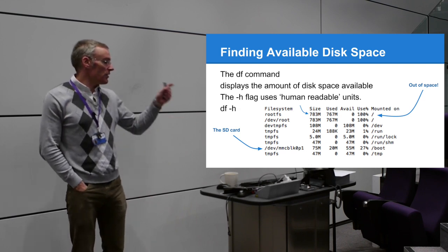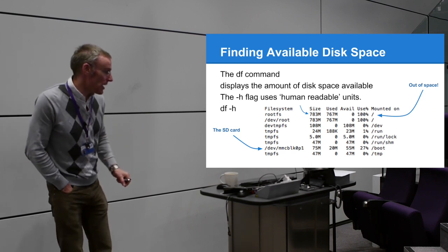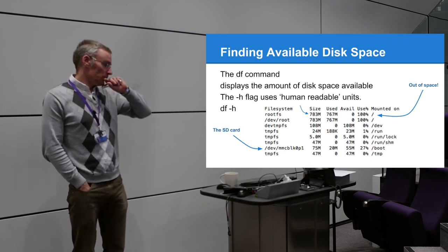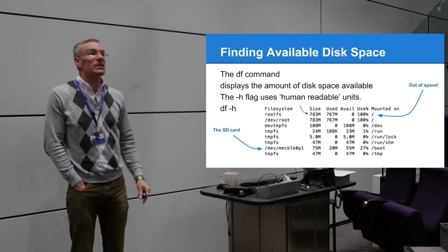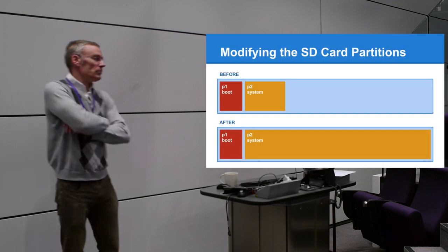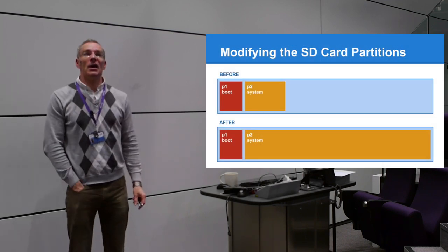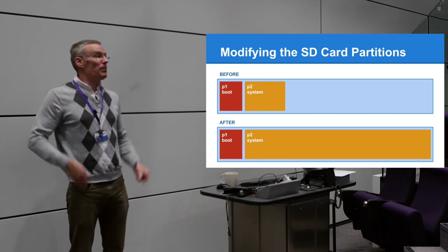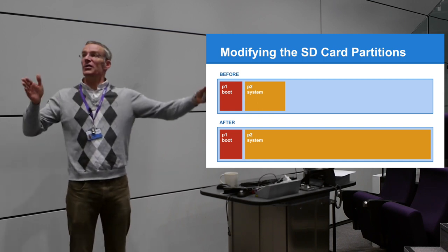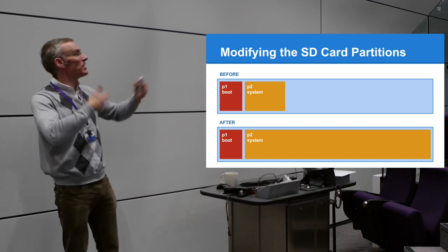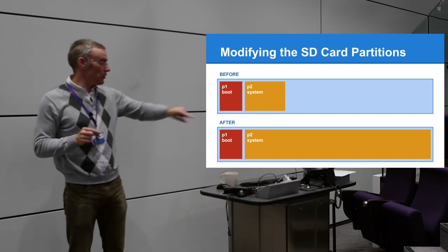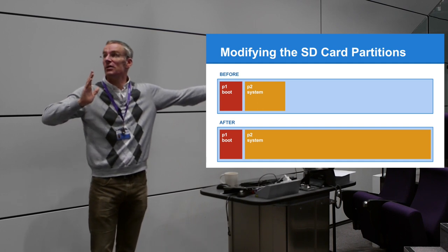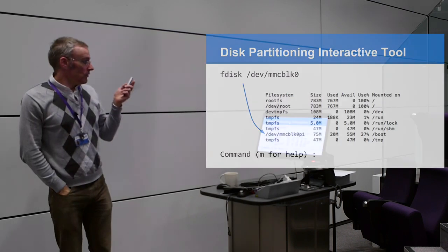You can see `mmcblk0p1` is the first partition (boot) and `mmcblk0p2` is the system partition, but the combined size is less than 1GB on a large card. We want to expand the system partition to use the whole card. To do this we use fdisk: run `fdisk /dev/mmcblk0` and type `p` to print the partition table. You can see two partitions - p1 is marked as bootable with an asterisk under the boot column.